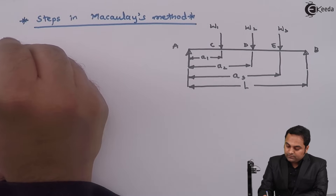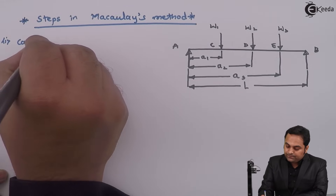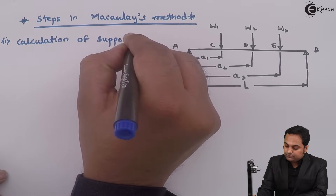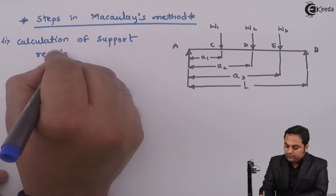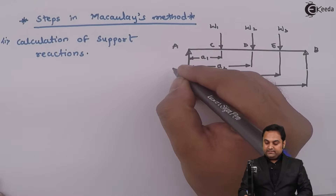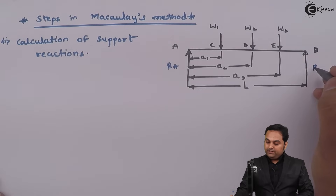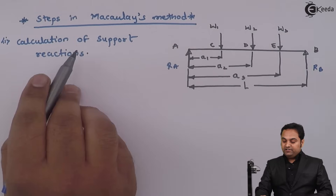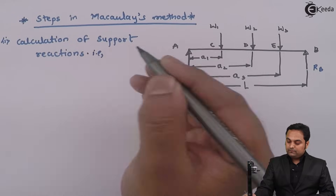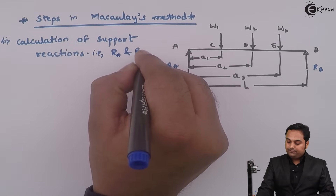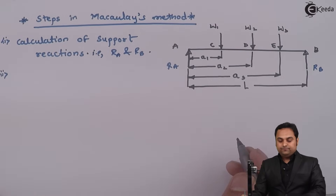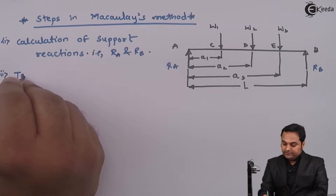The first step is the calculation of support reactions. First we are going to find the support reactions — at A it is RA, at B it is RB. So first we will get the values of support reactions RA and RB.